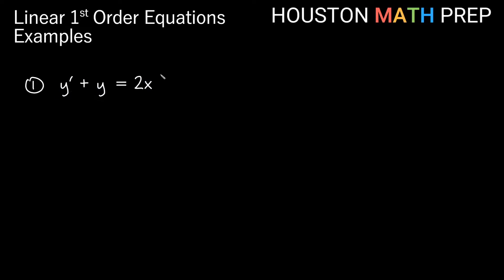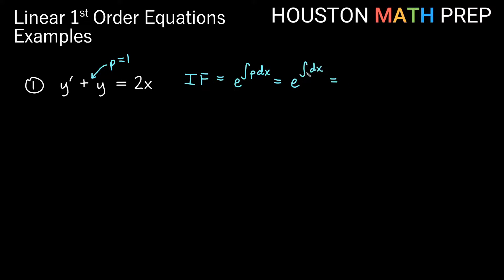This is already in the normal form, so we can go ahead and find our integrating factor. Our p is actually 1 — that's the function multiplying y. So our integrating factor, remember for these linear equations, is e to the integral of p dx. In this case it will be e to the integral of 1 dx, and the integral of dx is just x. So our integrating factor is e to the x.